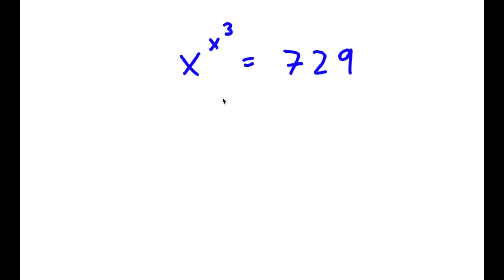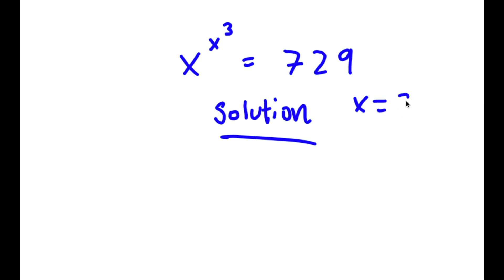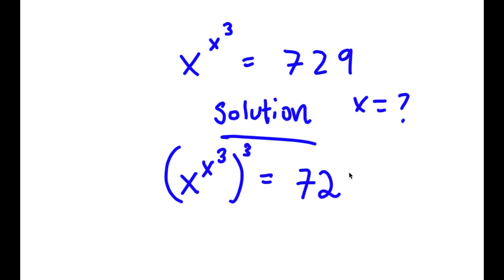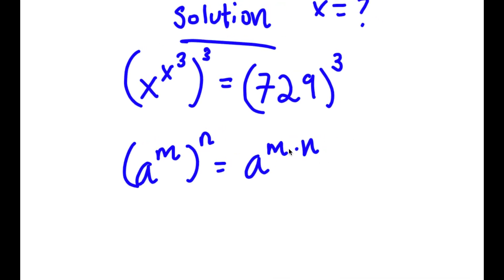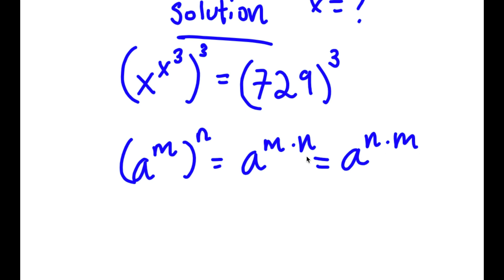In this problem, I have x to the power of x to the power of 3 is equal to 729. So I want to find the value of x. I'm going to start by taking the power of 3 on both sides, so now I have x to the power of x to the power of 3, to the power of 3, is equal to 729 to the power of 3. Now, if I have something in the form a to the power of m to the power of n, this is equal to a to the power of m times n. And a to the power of m times n is the same thing as a to the power of n times m — I can switch these two places.